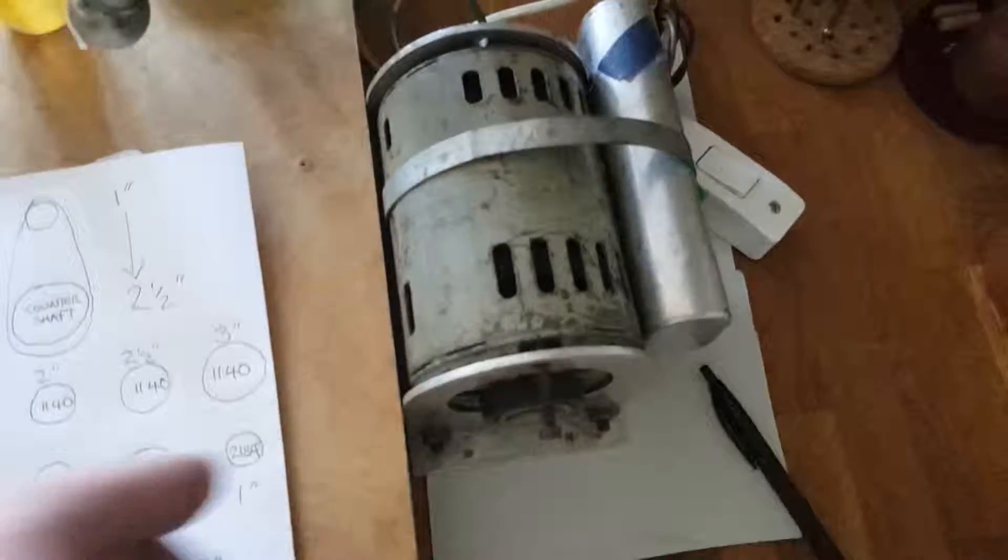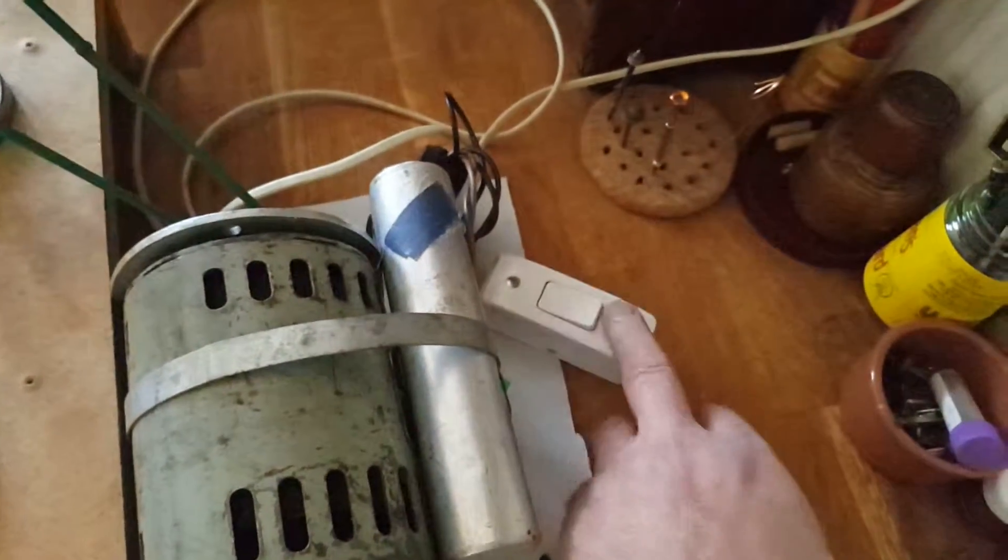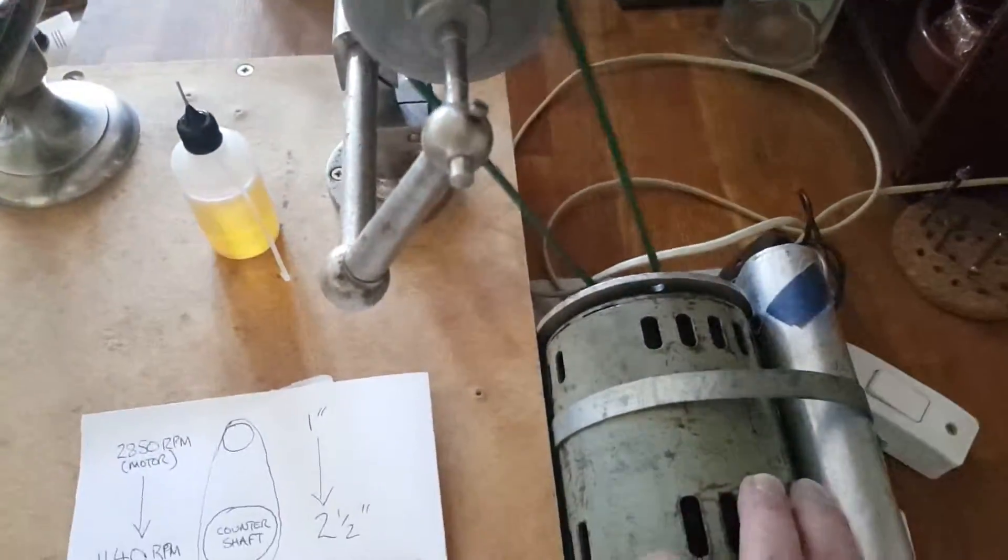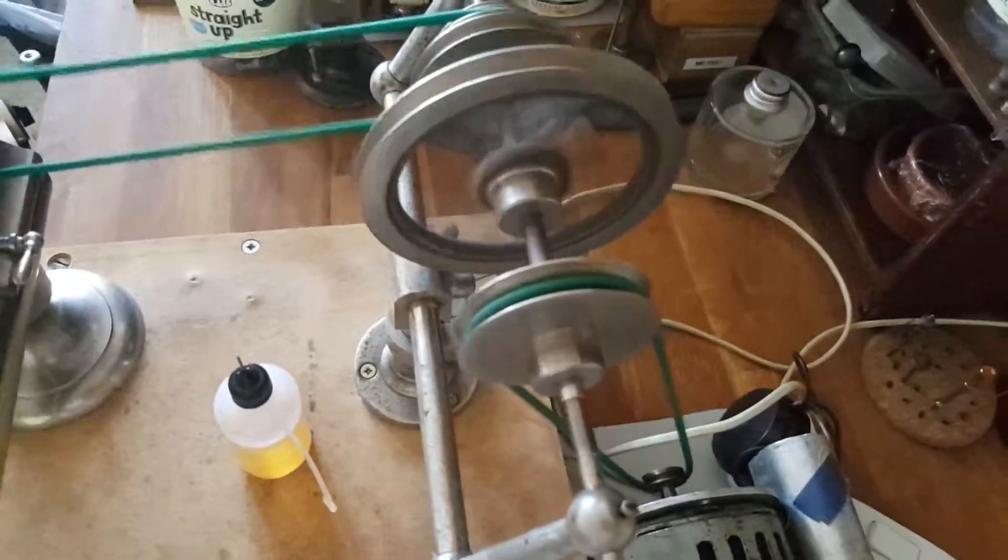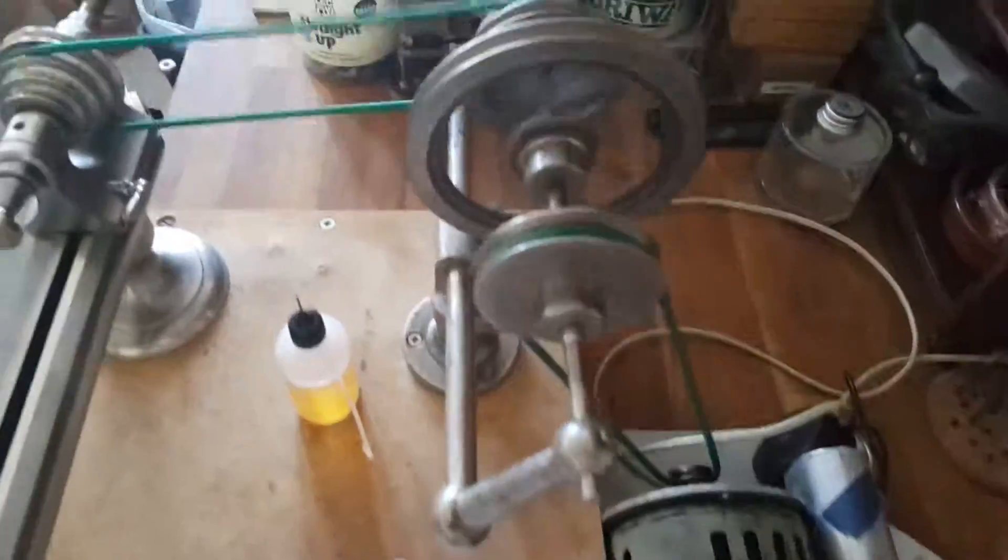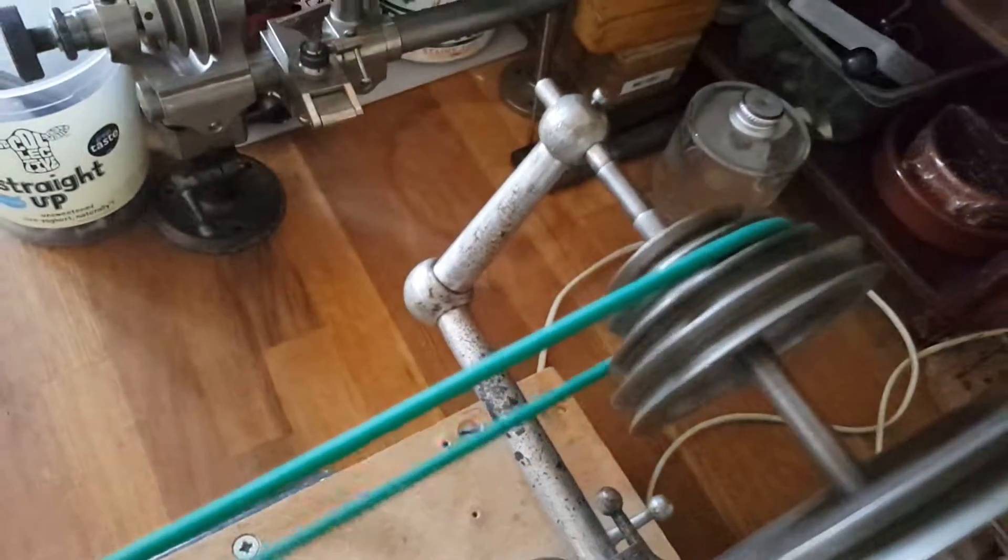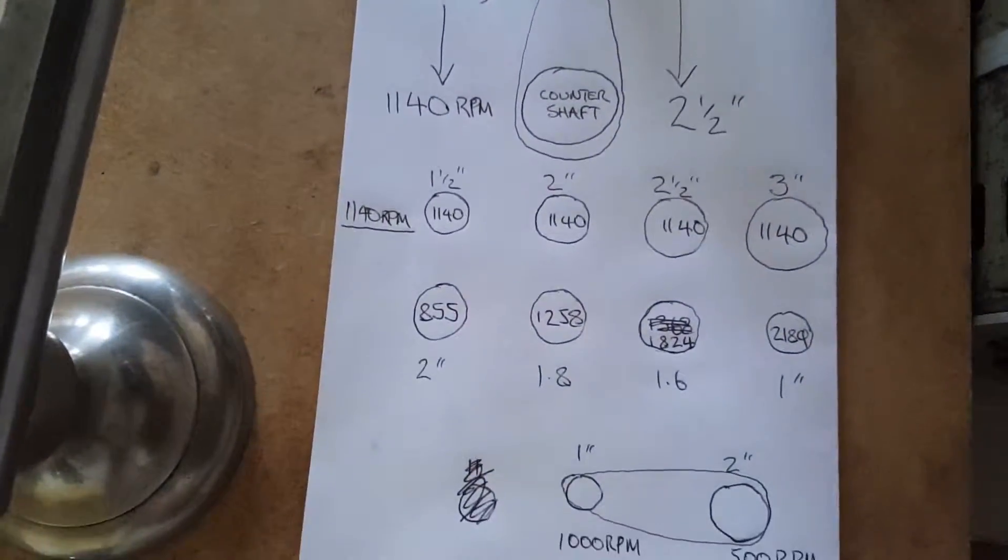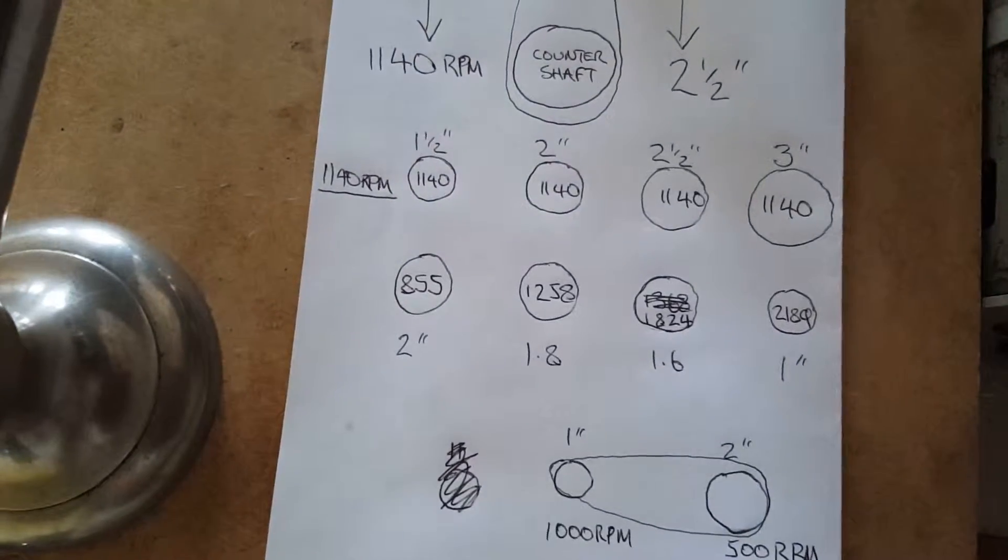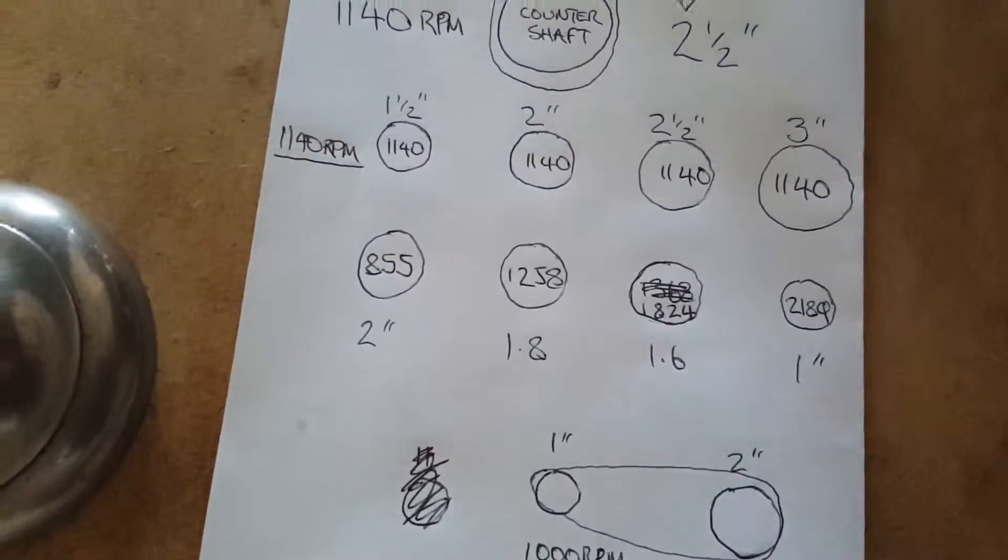I'll just start this up. This isn't fixed down, so I'm going to have to hold this, otherwise it wants to go shooting off somewhere. Let's turn that on at the wall. Okay, so at the moment, that is running off the second biggest pulley off the counter shaft here. So 2 inch to a 1.8. So at the headstock, it's running at 1258 RPM.